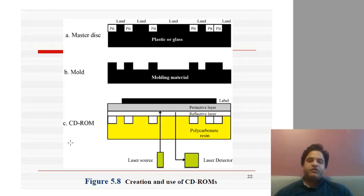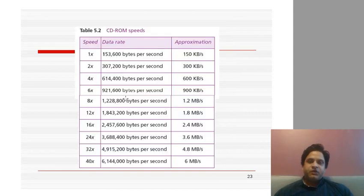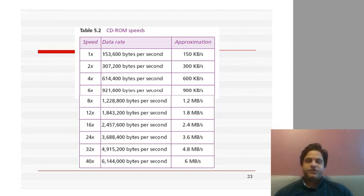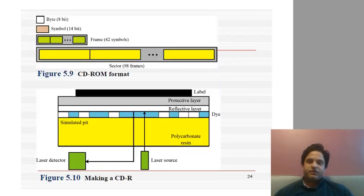CD-ROM speeds range from 1x (150 KB/s) to 40x (6 MB/s). While CD-ROM drives were common in older computers, USB sticks and external hard drives have largely replaced them. The data stored on a CD uses a specific format: 1 byte = 8 bits, 1 symbol = 14 bits (8 data bits + 6 error detection/correction bits), 1 frame = 42 symbols, and 1 sector = 98 frames.